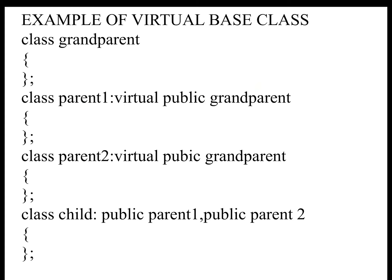This is the skeleton of Virtual Base Class. Class Grandparent is the base class. Class Parent1 is a derived class with Virtual Public Grandparent. Class Parent2 is a derived class with Virtual Public Grandparent. So here we have two base classes, Parent1 and Parent2, both sharing a common Virtual Public Grandparent. Class Child has all the properties of Public Parent1 and Public Parent2 via the Grandparent.